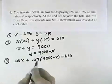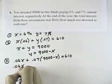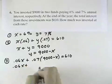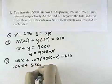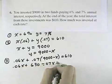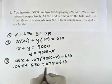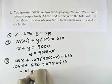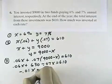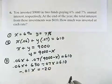So from here I'd have 0.06X plus 0.07 times 9,000 is 630 minus 0.07X should equal 610. 0.06 minus 0.07 is a negative 0.01X. And subtracting 630 from each side gives me negative 20.